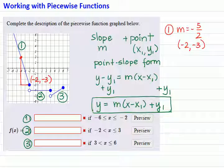And the point is negative 2 comma negative 3. So if I apply the point-slope form of the line, it should be negative 5 over 2 times x minus negative 2, which is x plus 2, plus negative 3, so minus 3.